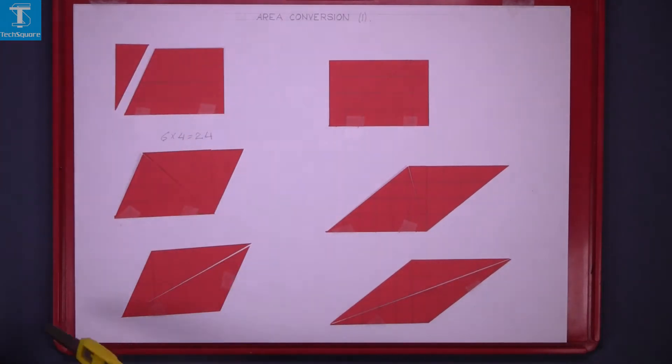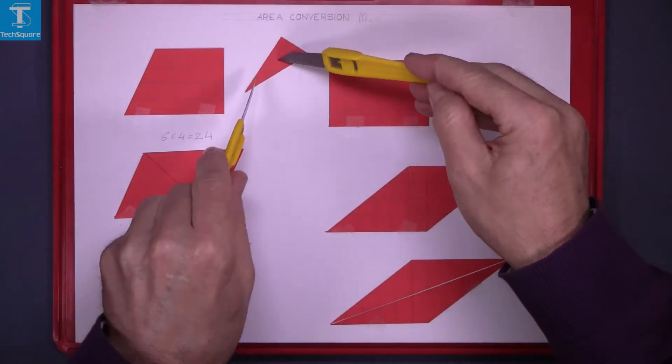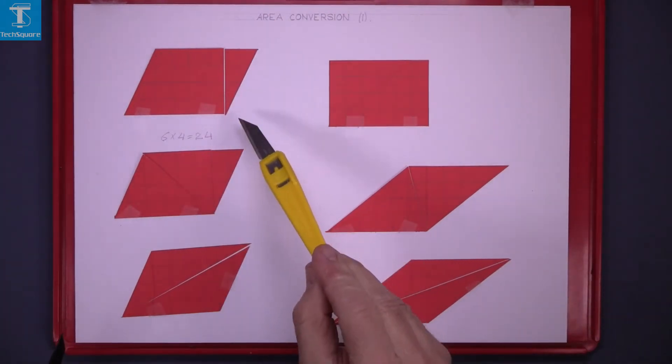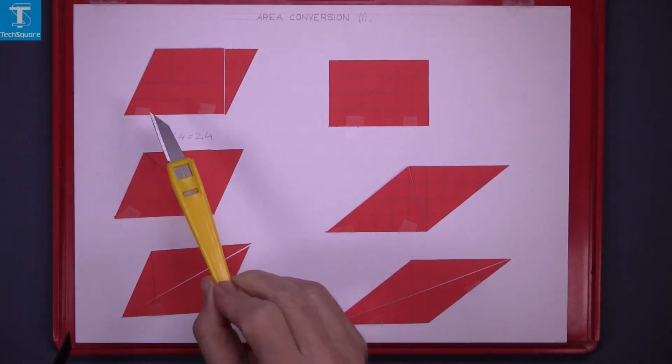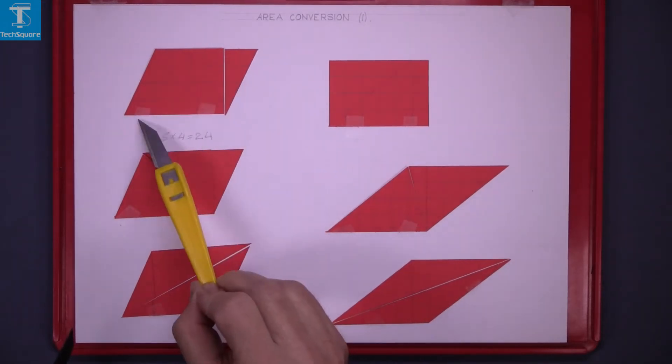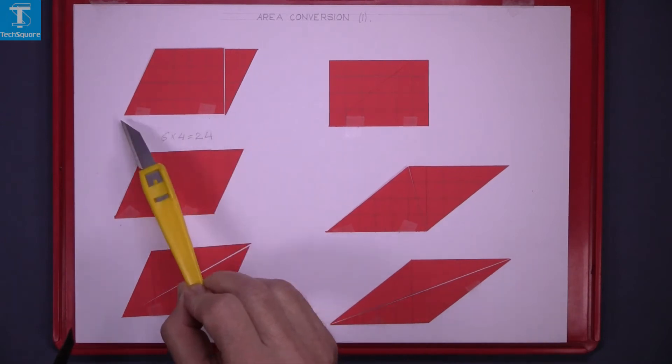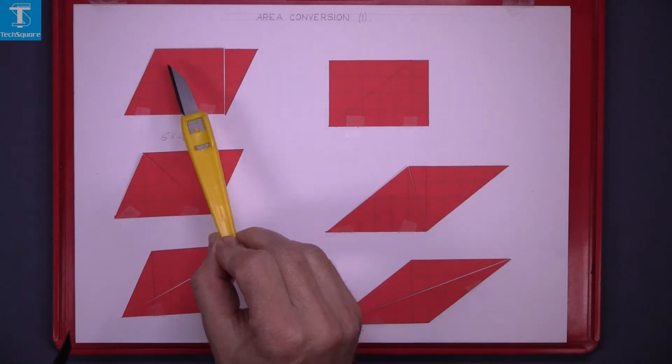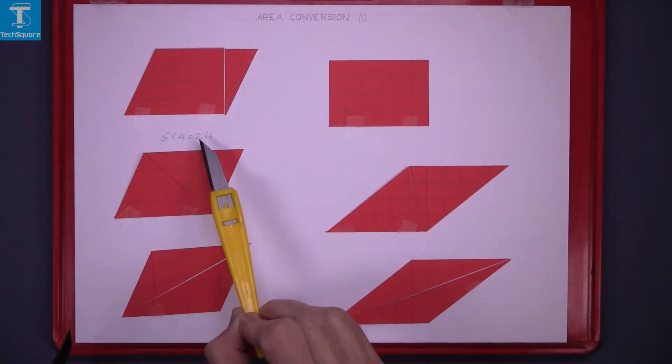I have sliced a piece of the corner here and if I put that piece on this side I end up with a quadrilateral. Now the area of this quadrilateral is the same as the rectangle that we had at the beginning. The height multiplied by the length so it's 6 and the height is 4 so the area of the quadrilateral is 24.